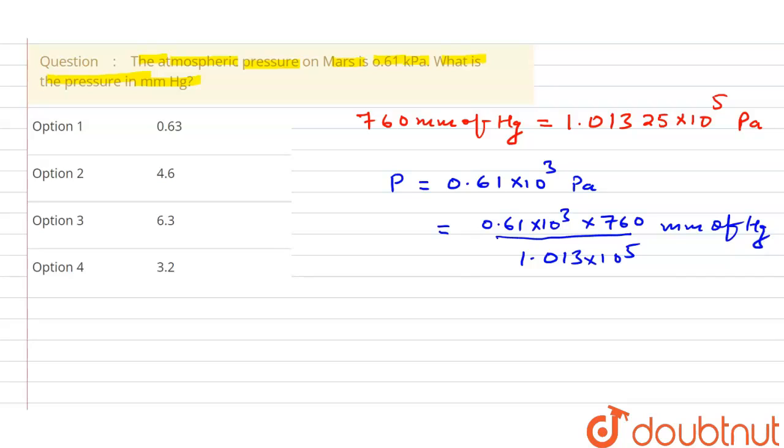Now calculate this value. So what will happen, this will get cancelled out, so 100 will be left. Now 10 will cancel out here also.